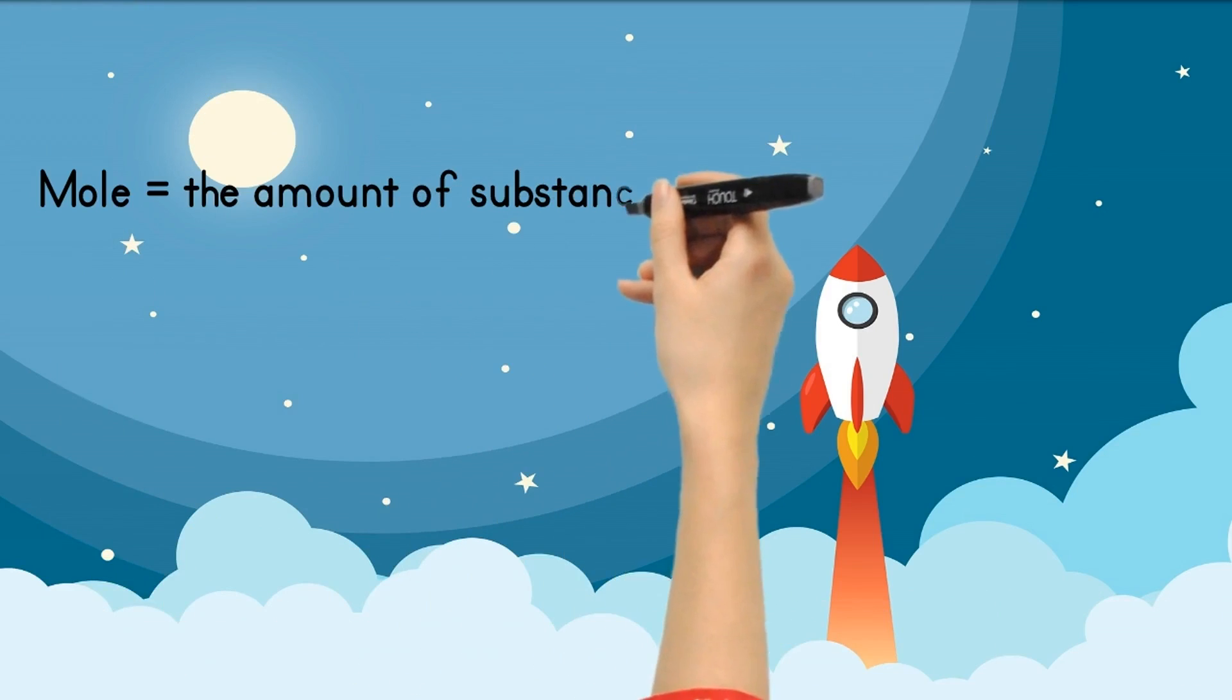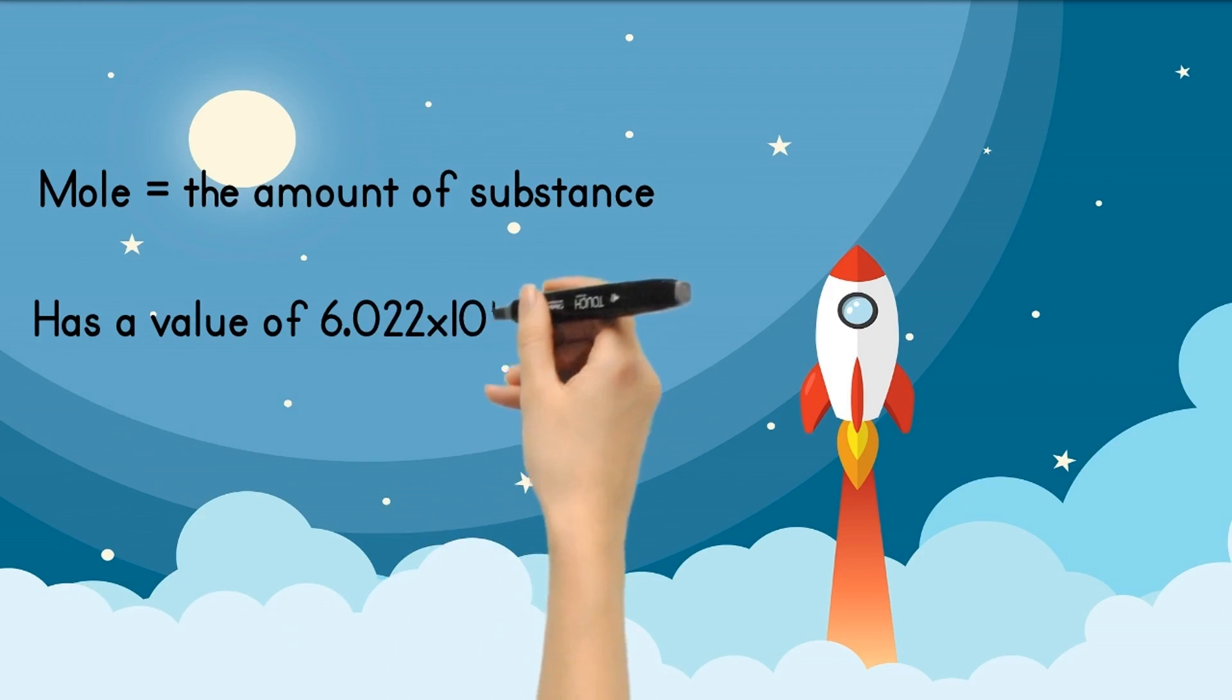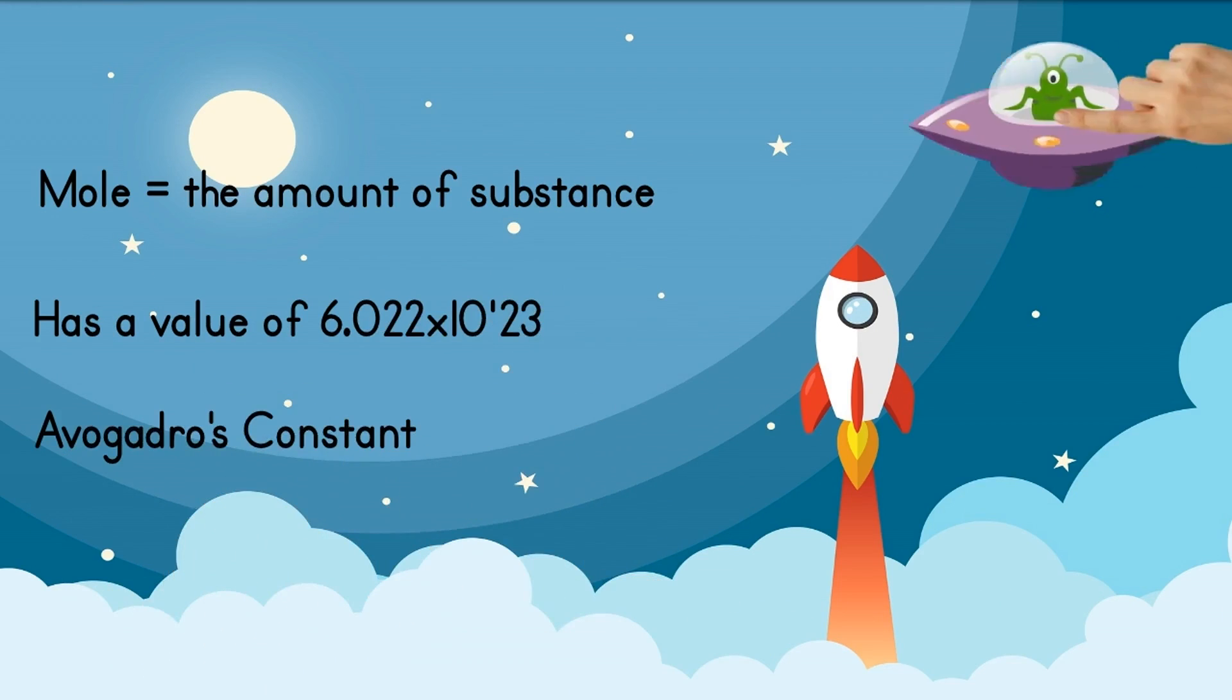The mole in chemistry means the amount of substance. It has a value of 6.022 × 10²³, which is known as Avogadro's constant.